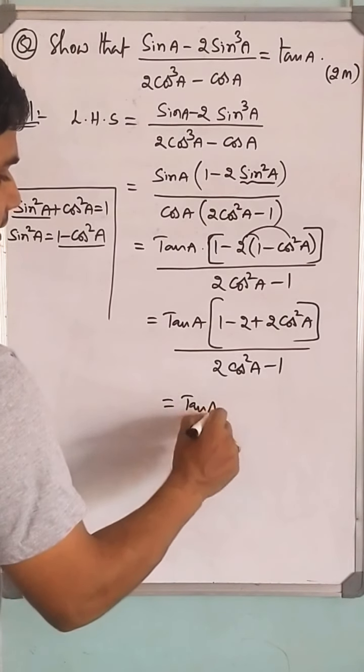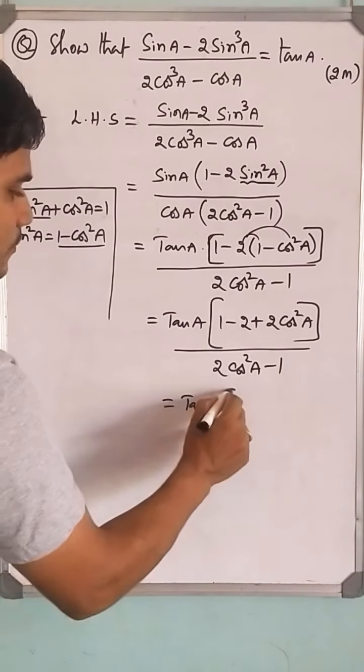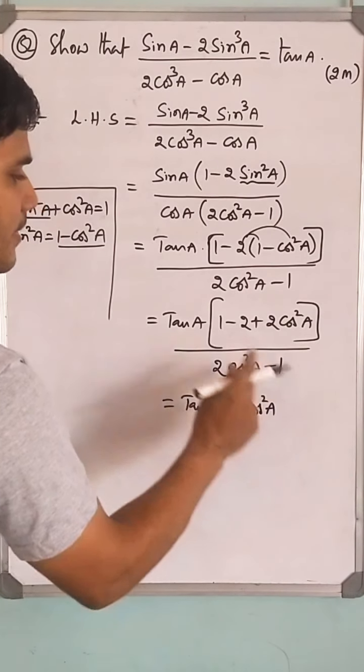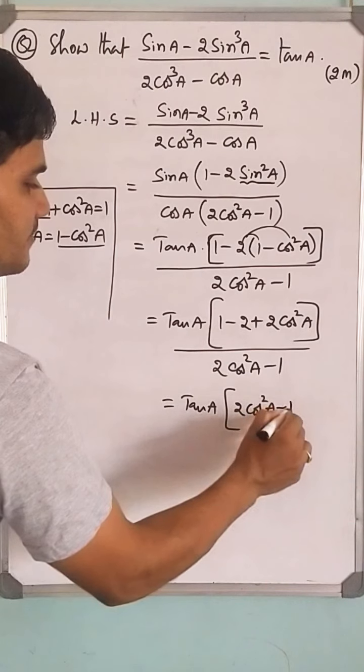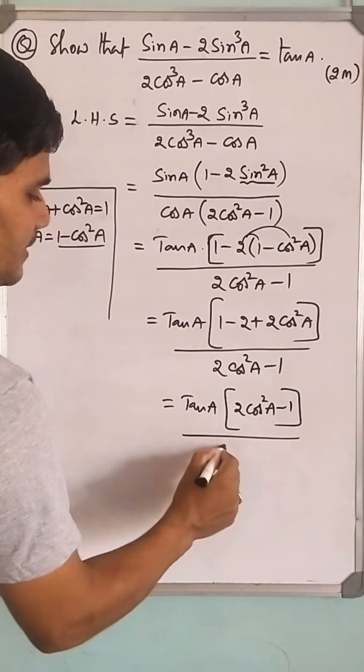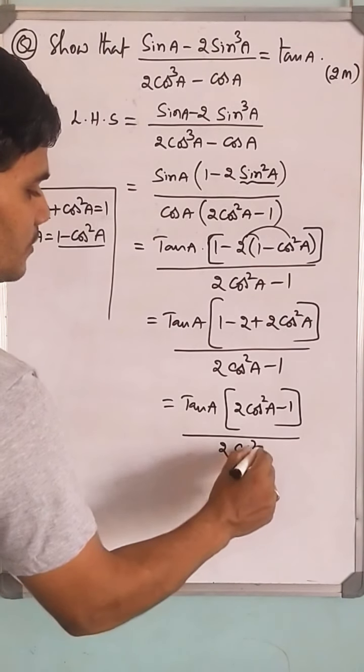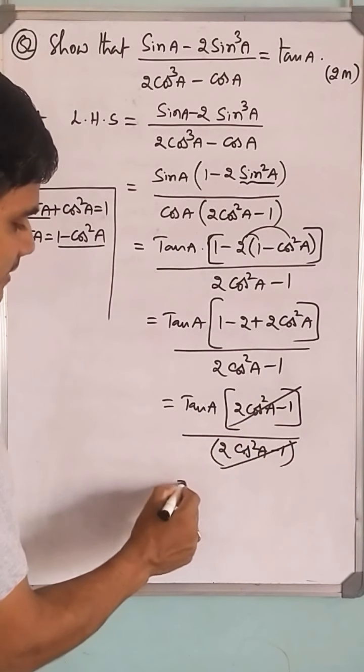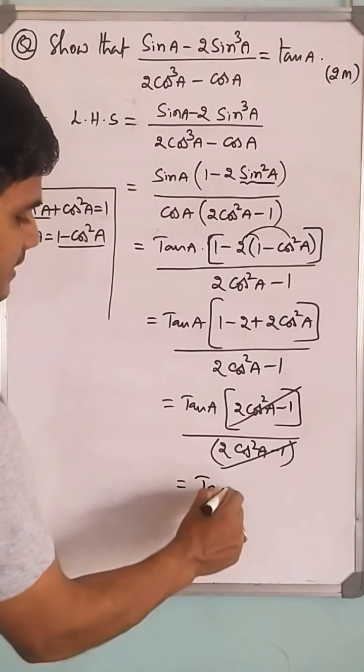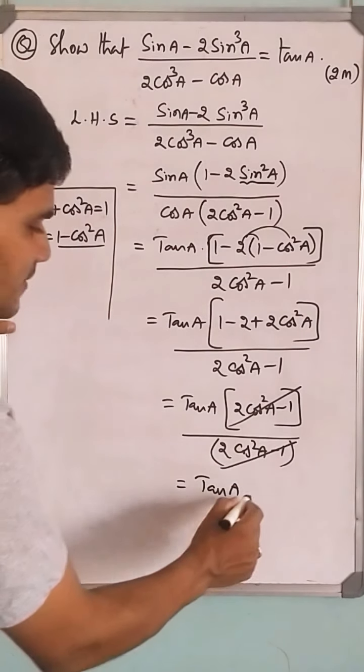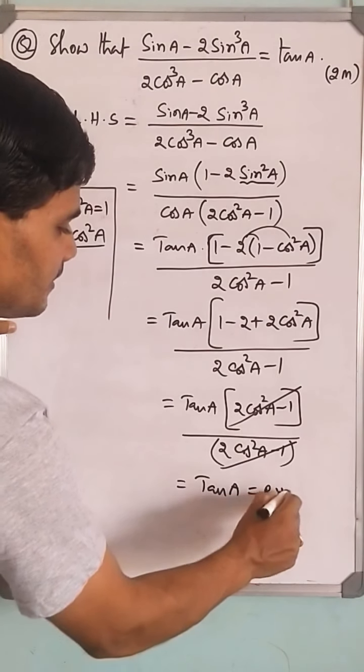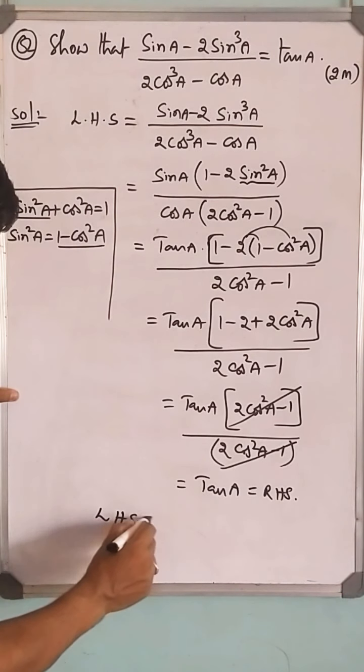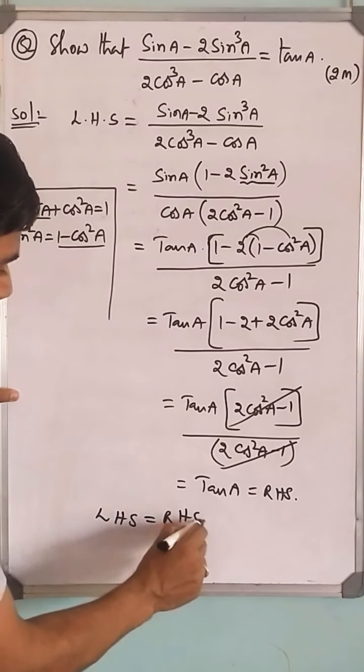Again, tan a times 2cos²a / (2cos²a - 1). The numerator simplifies to 2cos²a - 1. These two factors get cancelled. Then the expression becomes tan a, which is your RHS. LHS equals RHS.